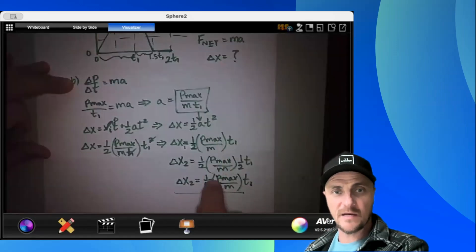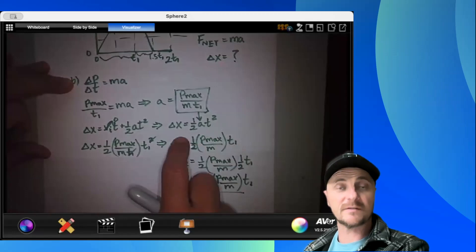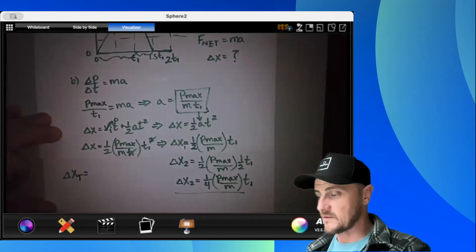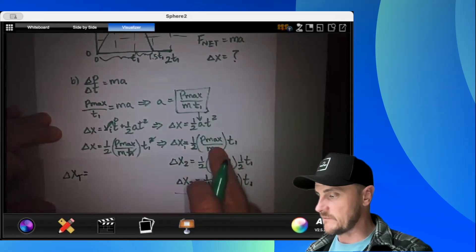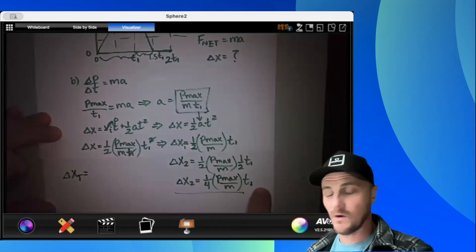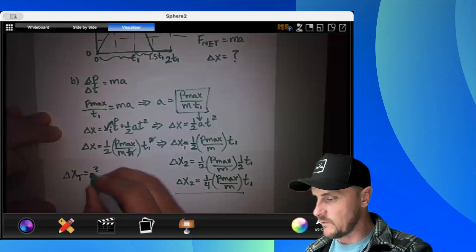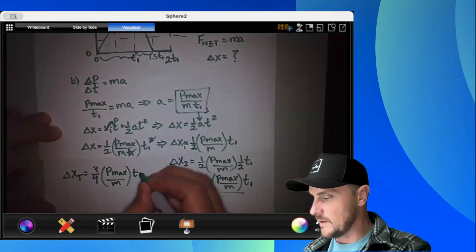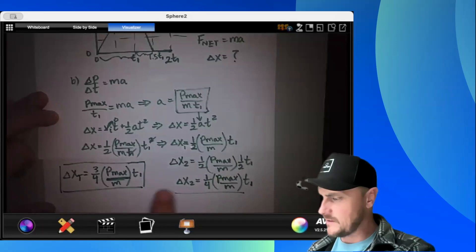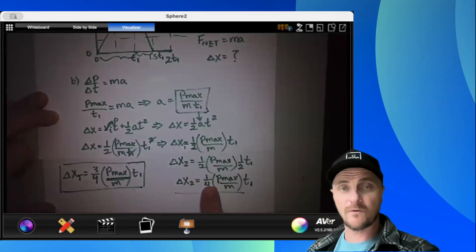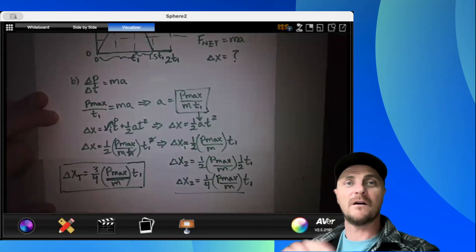So these terms stand for both equations of delta x. Now we have to do the delta x total. Delta x total would be one-half p max over m times t1 plus one-fourth p max over m times t1, which would just come out to three-fourths p max over m times t1. And if you're not sure what we just did, well, one-half is the same as two-fourths. Two-fourths plus one-fourth would be three-fourths. On to part c.